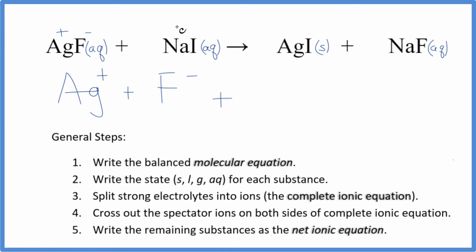Sodium is group 1 on the periodic table, so that's 1+. The iodide ion is 1-, so we have Na+ and then I-. These are the reactants in our complete ionic equation. For the products, we don't split solids apart, so we're just going to put AgI here.